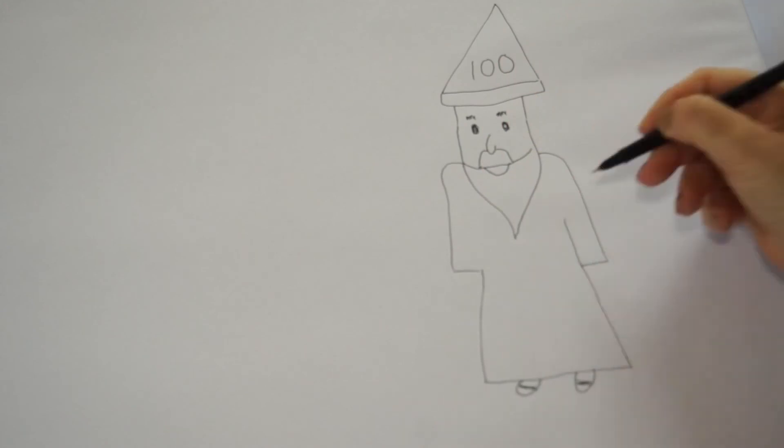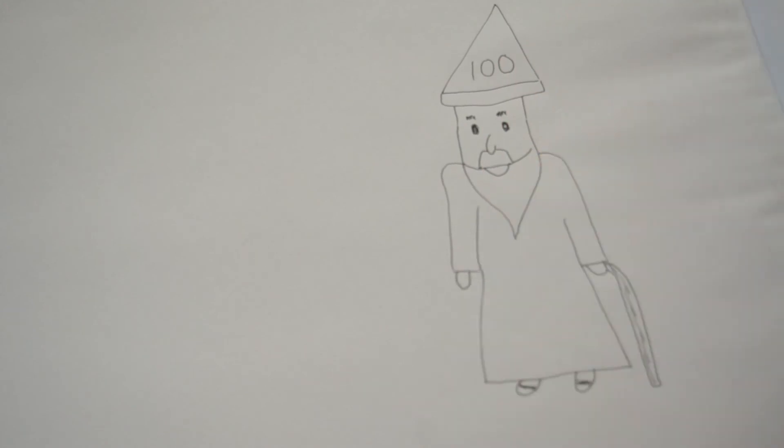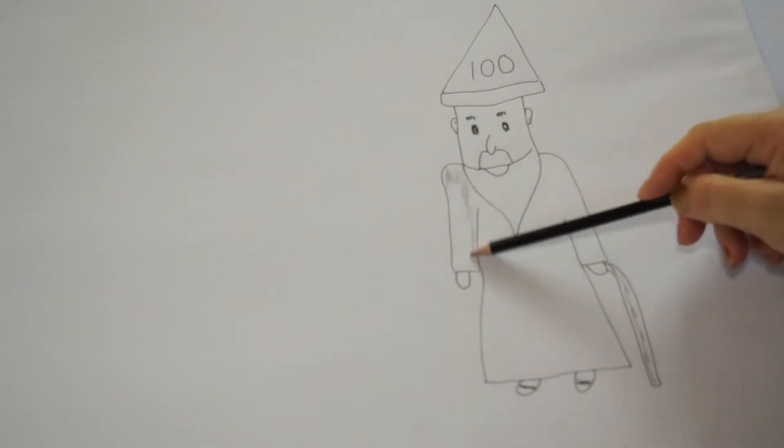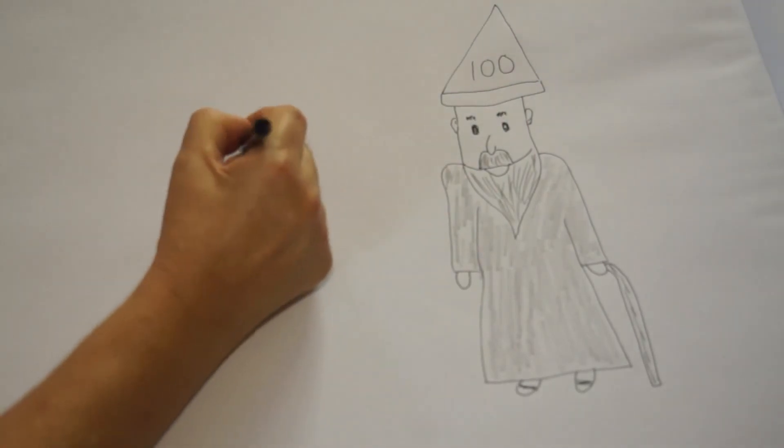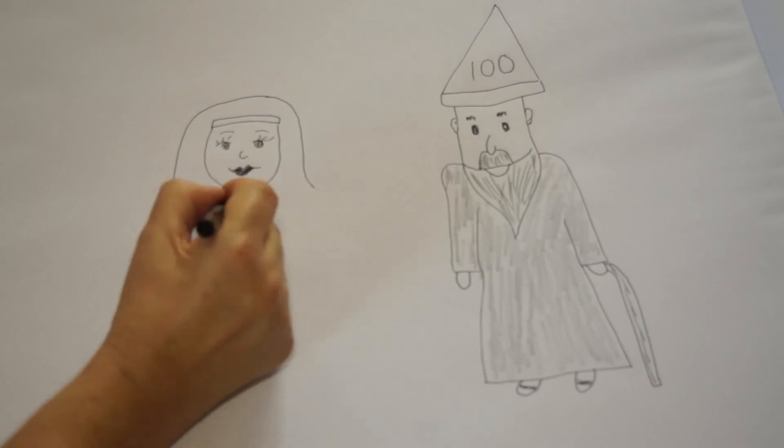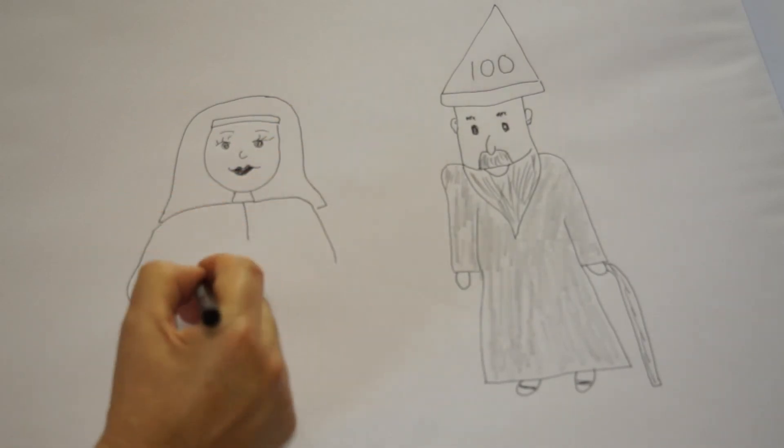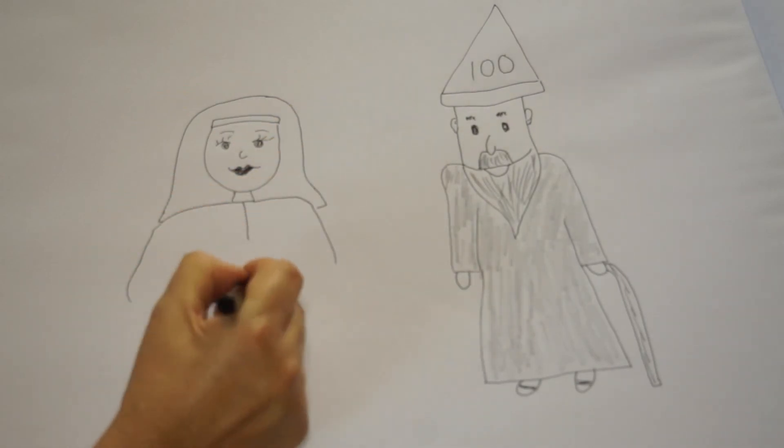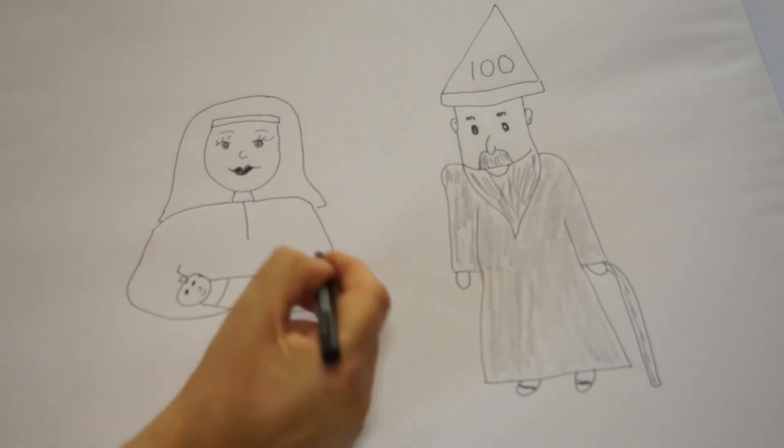Sure enough, next year when Abraham was a hundred years old, Sarah had a baby boy. They named him Isaac. Sarah said, 'God has brought me laughter and all who hear about this will laugh with me that we would have a child in our old, old age.'